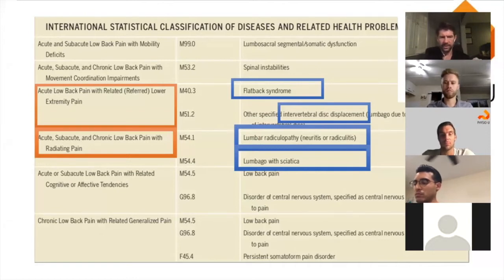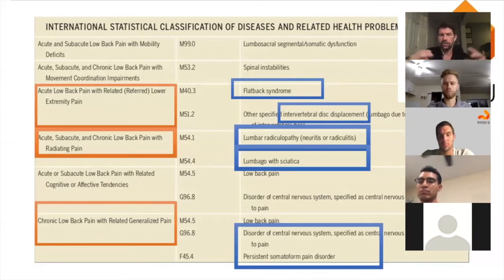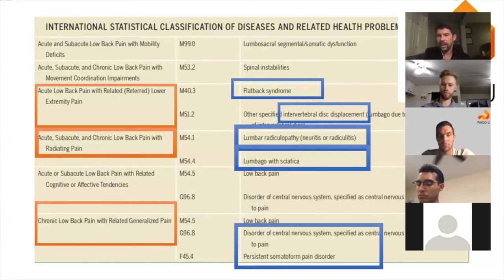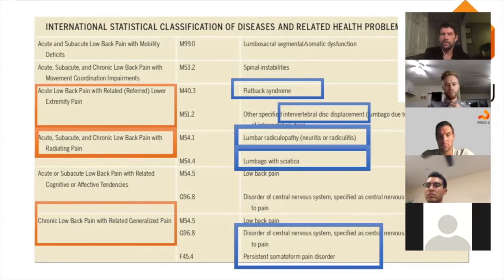The third category to keep in mind is chronic low back pain with generalized pain, sometimes called persistent pain syndrome. With chronic pain, the nervous system becomes hypersensitive. Someone might have had local back pain for 20 years and start to get some smudging and hypersensitivity, developing pain down the legs that isn't related to true lumbar radiculopathy or a disc bulge — it's a centralized component with a hypersensitive nervous system.